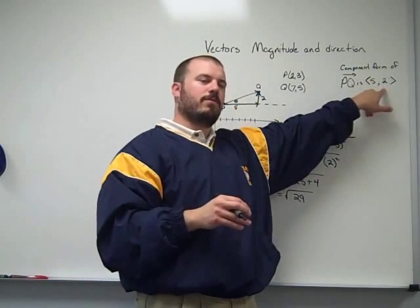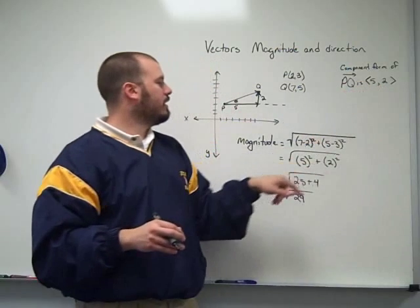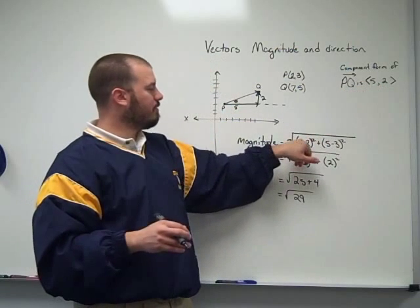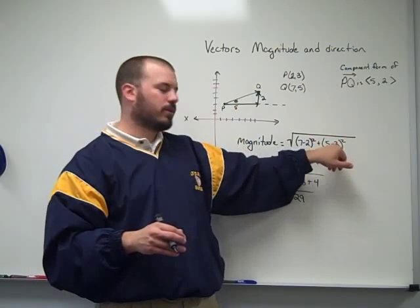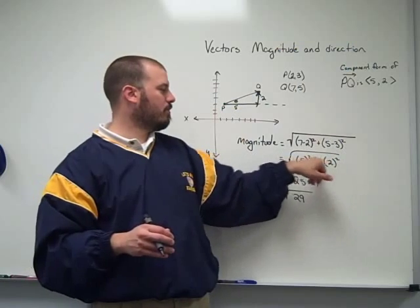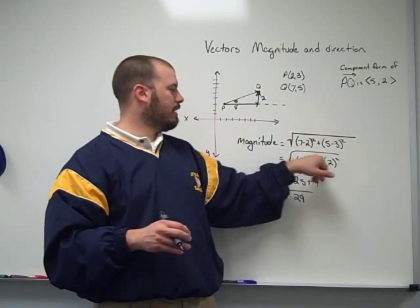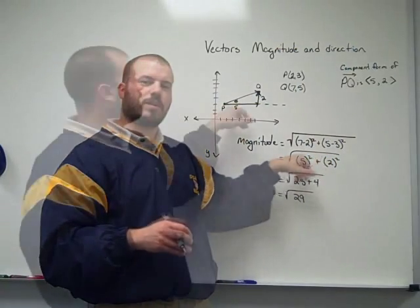And the way that the component form of the vector is found is simply by looking at the difference between the x-coordinates, 5, and the difference between the y-coordinates, 2. And you'll notice the component form of the vector ends up showing up in our distance formula here, direction.